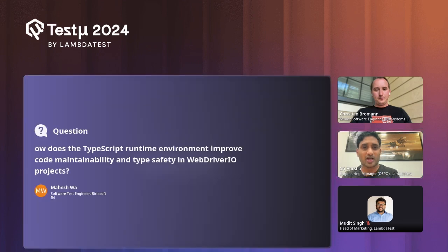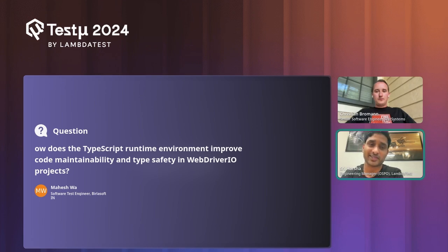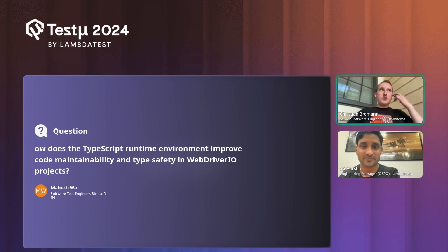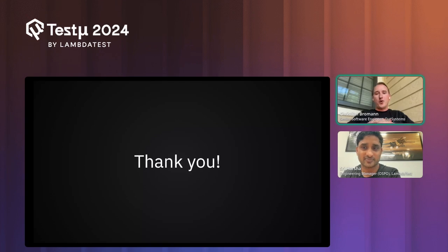Q: How does the TypeScript runtime environment improve code maintainability and type safety? A: In WebdriverIO v9, Chris made a lot of changes to TypeScript compatibility — there are better typings available for handling elements and actions. We also replaced our TypeScript runtime: we were previously using ts-node and are now using tsx, a different runtime bundle that provides performance improvements. Performance gains are usually marginal though, since the browser communication is typically the bottleneck when running tests.